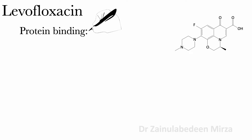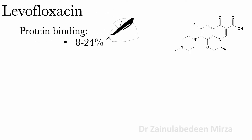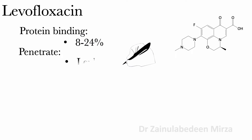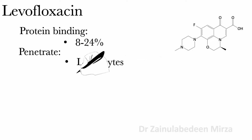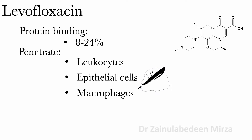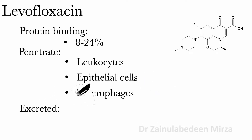Protein binding of levofloxacin is about 8 to 24 percent. Levofloxacin is distributed rapidly and extensively into local sites, epithelial cells, and macrophages, and it is excreted in the urine.